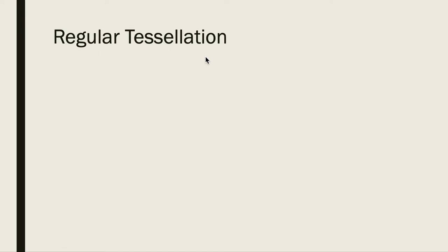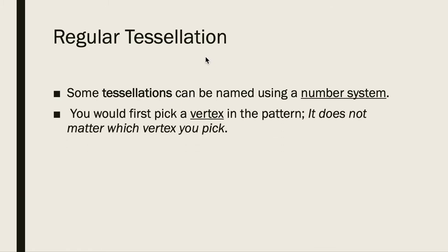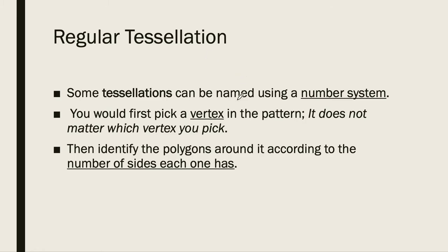Some tessellations can be named using a number system. You first pick a vertex — a point where the edges of the polygons meet. It does not matter which vertex you pick. Then you identify the polygons around that vertex according to the number of sides each one has.